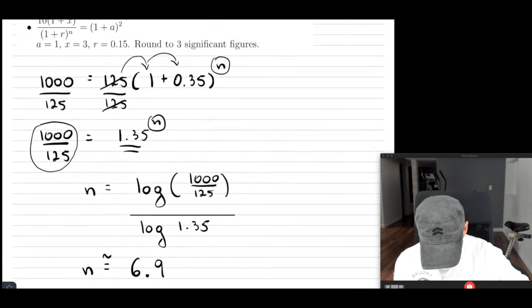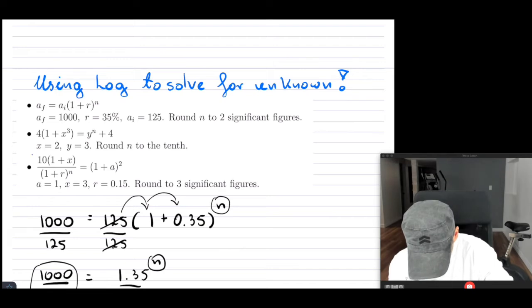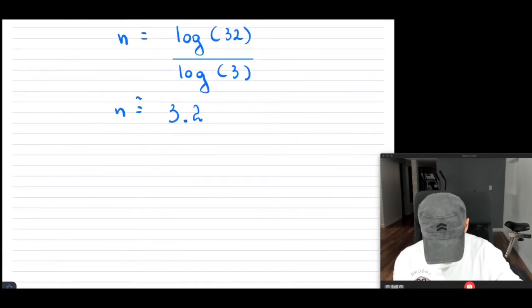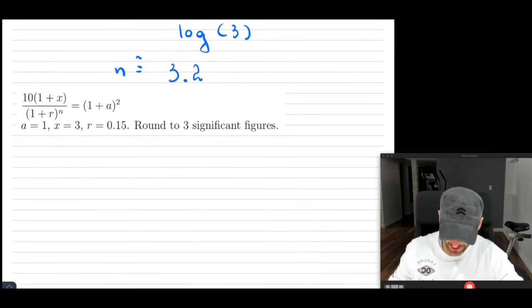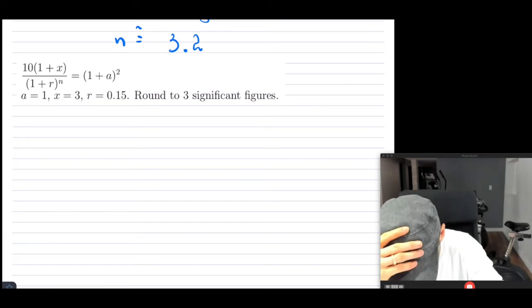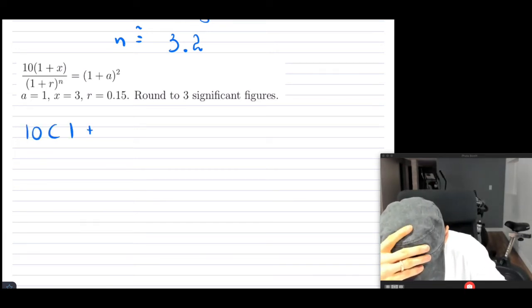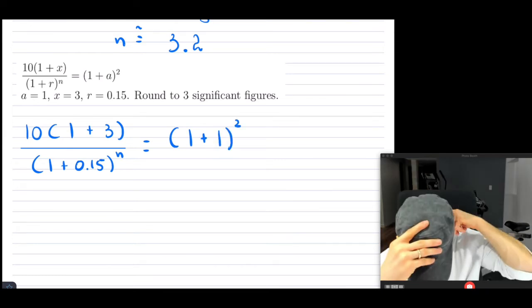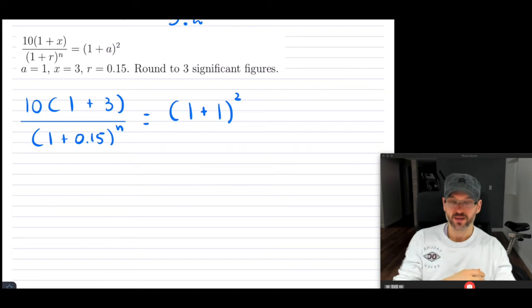Let's take a look. Example number three. This one looks complicated. Maybe it won't be. Copy. Let's bring it down. Paste. Like that. Make it bigger. So let's substitute everything in. So on the left-hand side, what do I have? I have 10 times (1 plus x) is 3 there. See that? Divided by (1 plus r) is 0.15 to the n equals (1 plus a). A is 1. This is that.